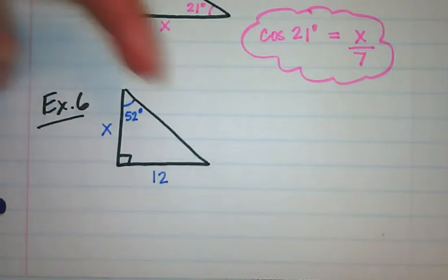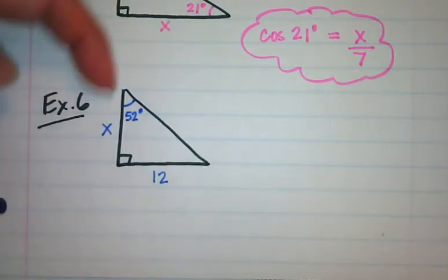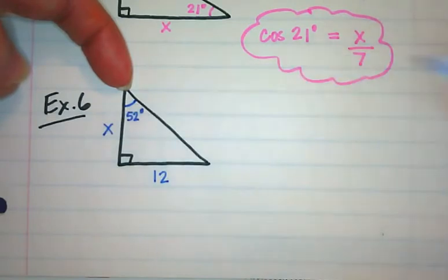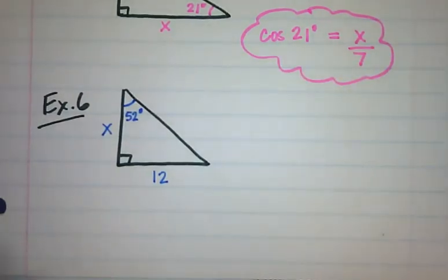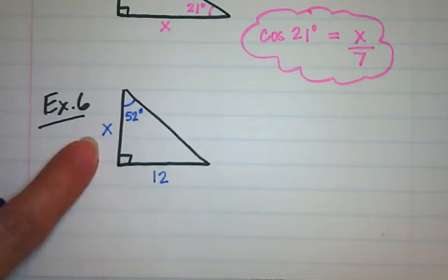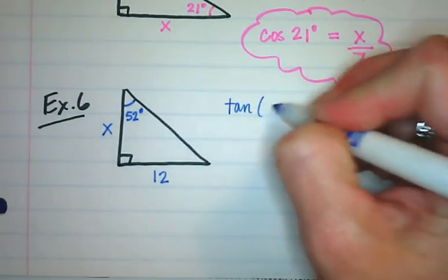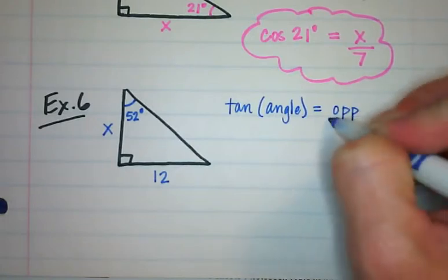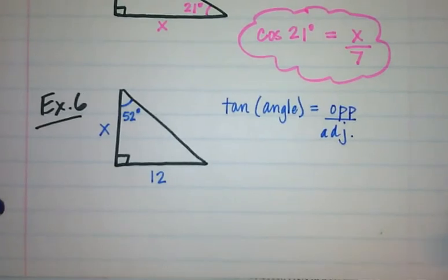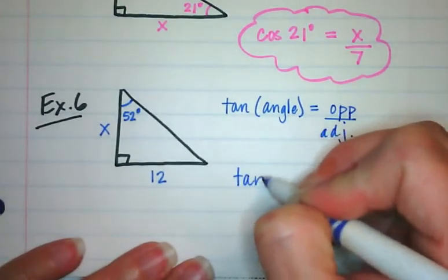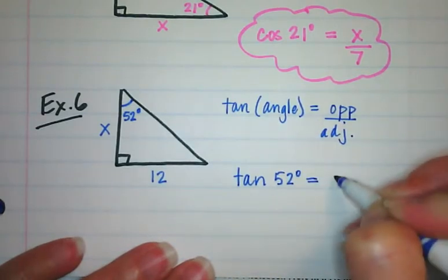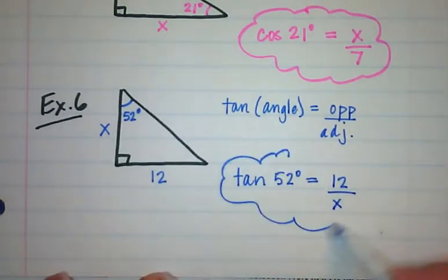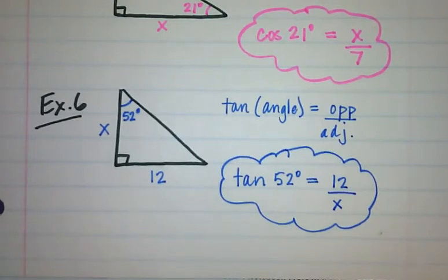In this triangle, we don't know the hypotenuse. From this angle, the opposite side is 12 and we want to find the adjacent side. The trig function that relates the opposite and adjacent sides is tangent. The tangent of the angle equals the opposite over the adjacent. So for this triangle, the tangent of 52 degrees equals 12 over x. That is the trig function represented in this triangle.